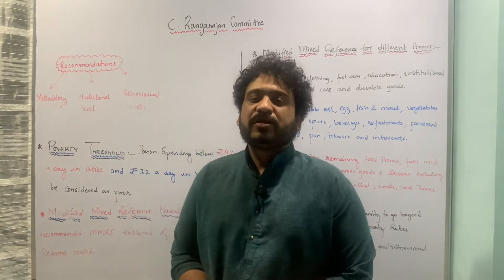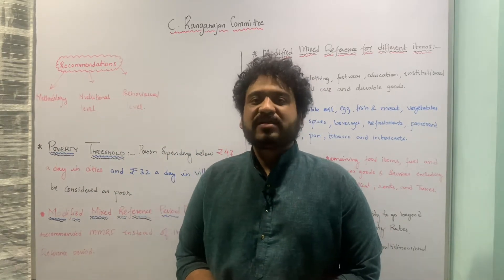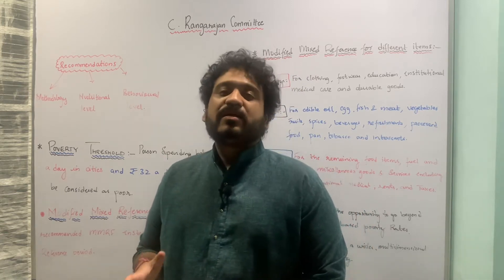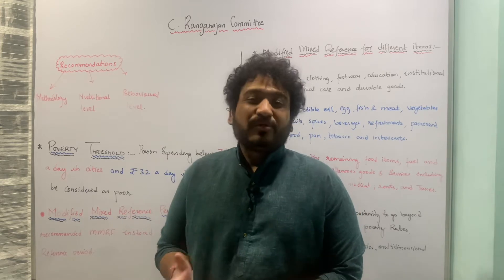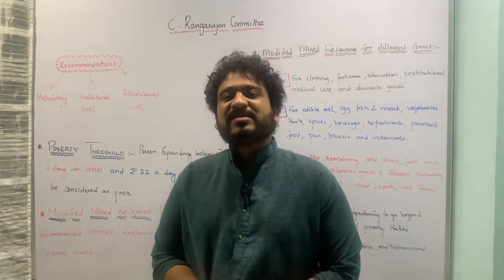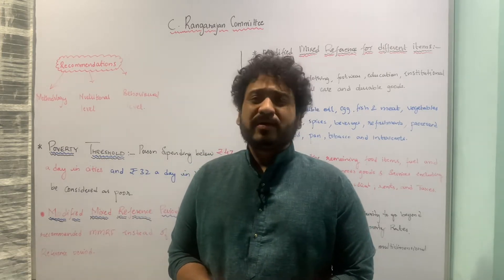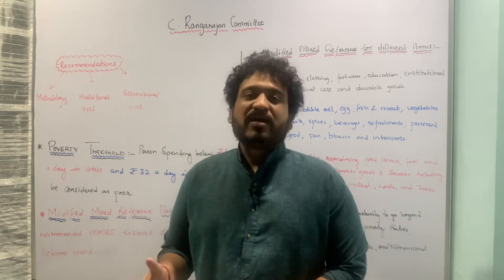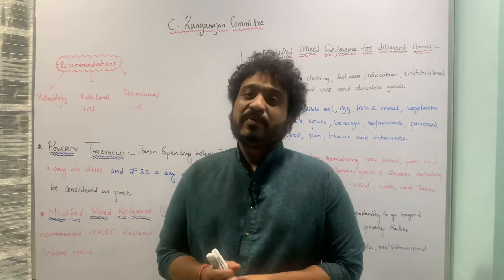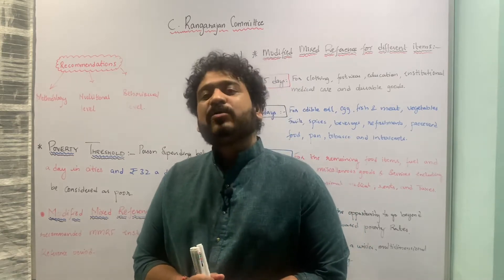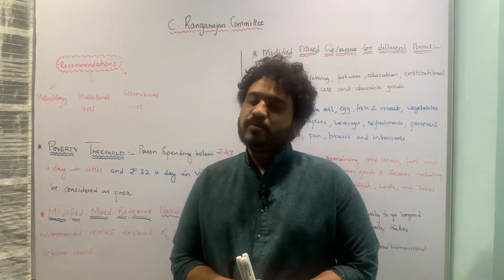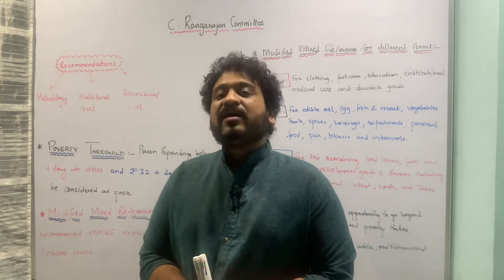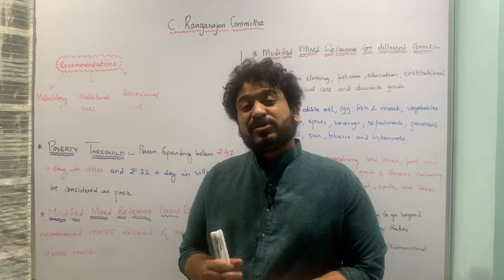Hello and welcome to the lecture series on Economics of Growth and Development. In the previous class I talked about the Rangarajan Committee, and we know it was set up on the backdrop of national outrage against the Planning Commission's estimate of poverty, which was pegged at rupees 22 in rural areas per day. People who were spending rupees 22 per day were not considered to be poor.